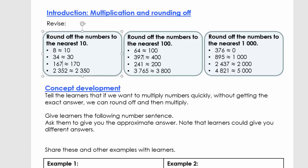For 397, we ask: between which two 100s? It's between 300 and 400. We look at the 10s place — 90 — and 390 is closer to 400, so we round it off to 400. For 241, it's between 200 and 300. We use the 10s digit, which is 40. Anything lower than 5 goes to the previous number, so 241 rounded off is 200.